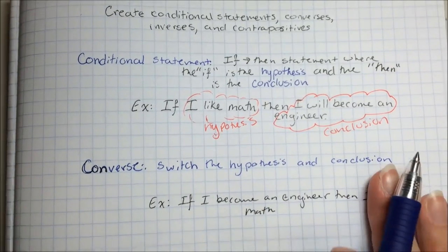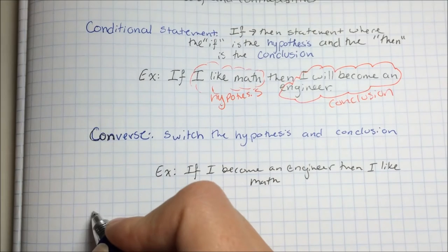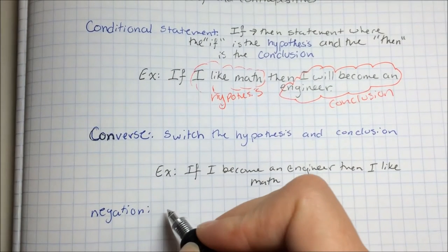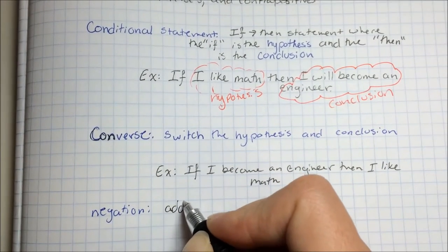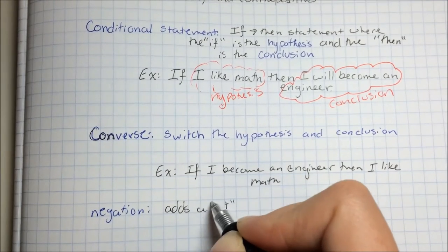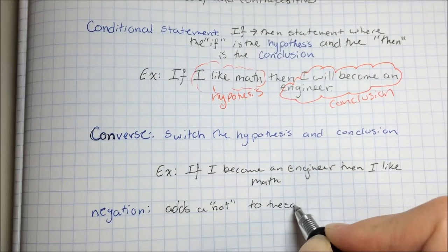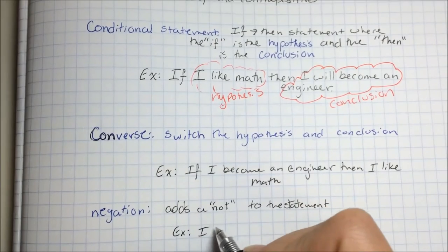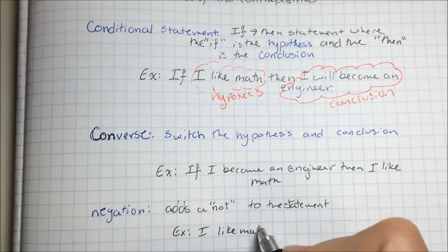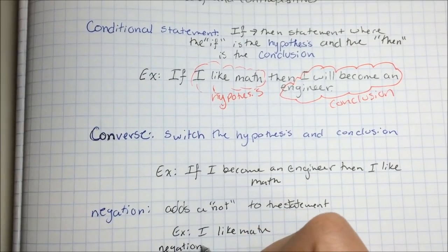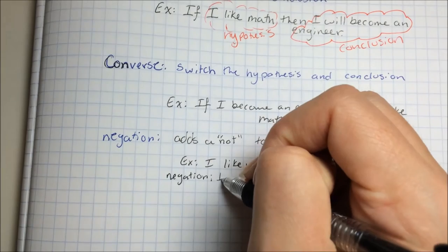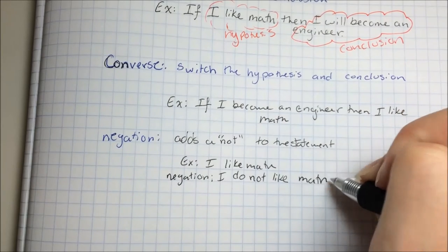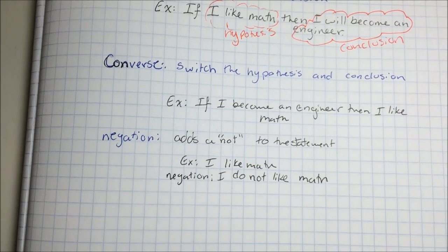We can have a negation, and a negation just puts a not in front of our statement. So an example might be I like math, and the negation would be I do not like math, which isn't true.